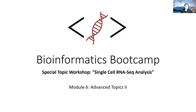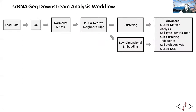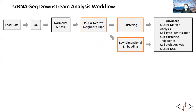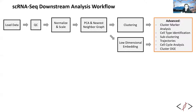Let's go ahead and recap what we've done so far. We started with the single-cell RNA-seq downstream analysis workflow, going through how to load the data, do quality control, and do normalization and scaling. We then moved on to PCA and nearest neighbor graphs, clustering and low-dimensional embedding like TSNE and UMAP. Finally, we talked about advanced topics such as cluster marker analysis and cell type identification. We didn't get to sub-clustering, so I'll briefly touch on this today. We did talk about trajectories, cell cycle analysis, cluster DGE, integrating datasets, and a couple other minor points.